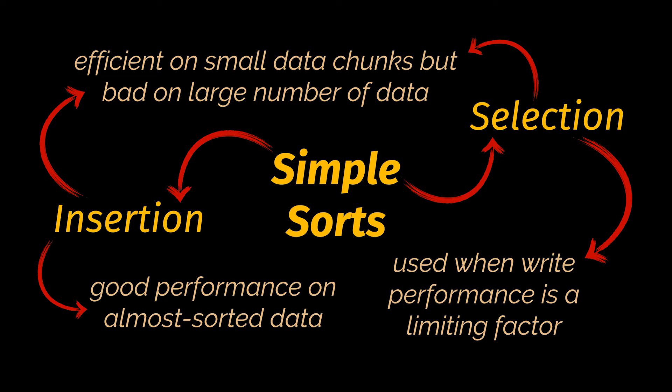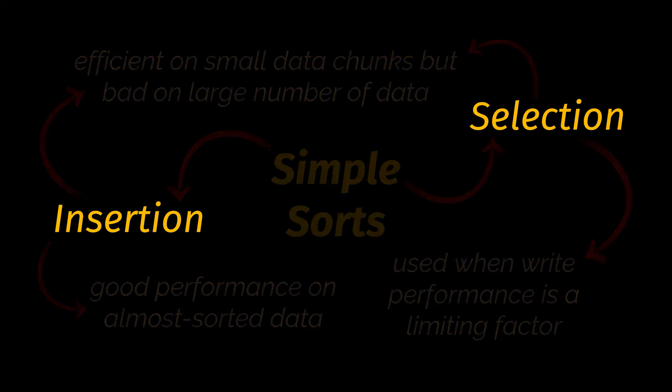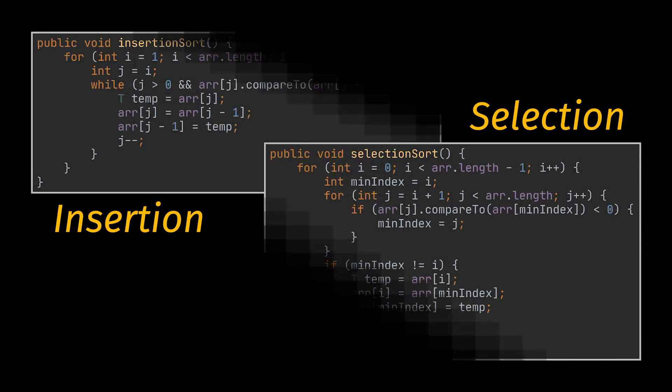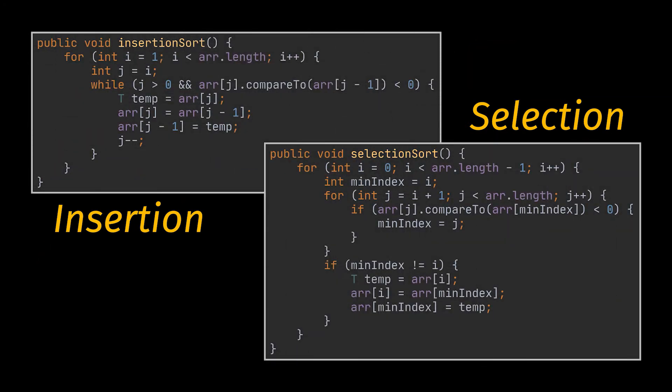Selection sort uses fewer writes and is preferred when write performance is a limiting factor. Looking at the code backing these two algorithms, similar to bubble sort, both code snippets have a Big O of O(n²) — that is the worst case you can have.